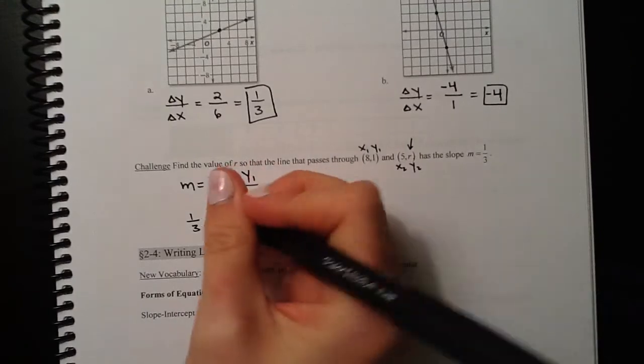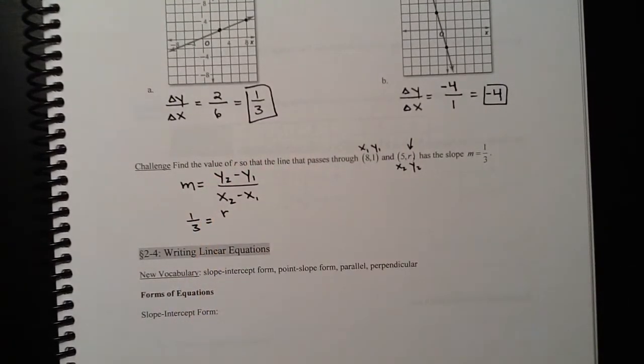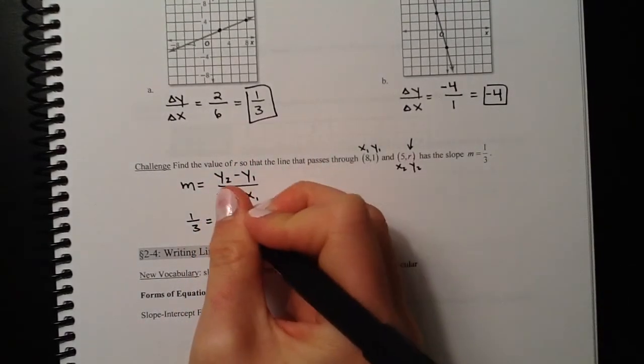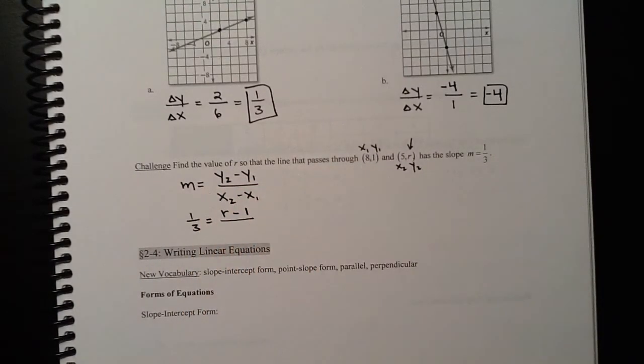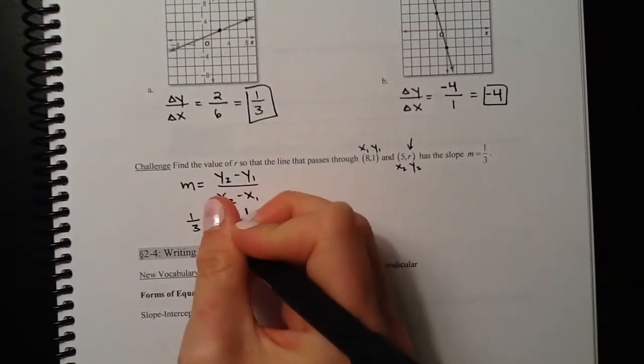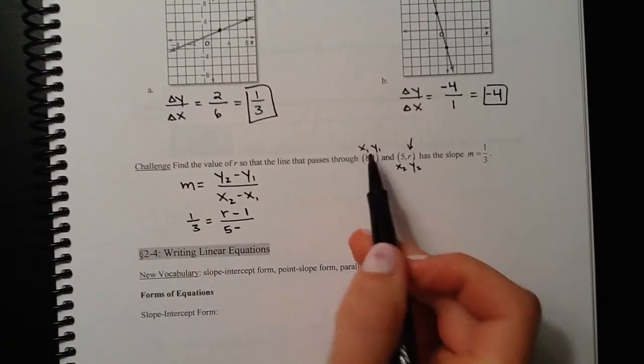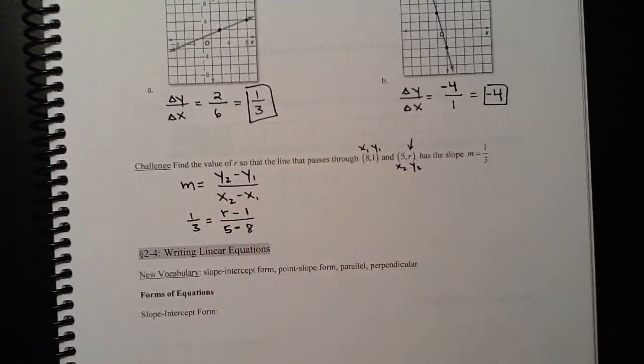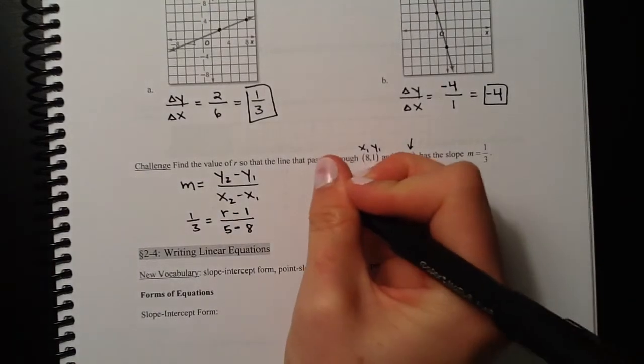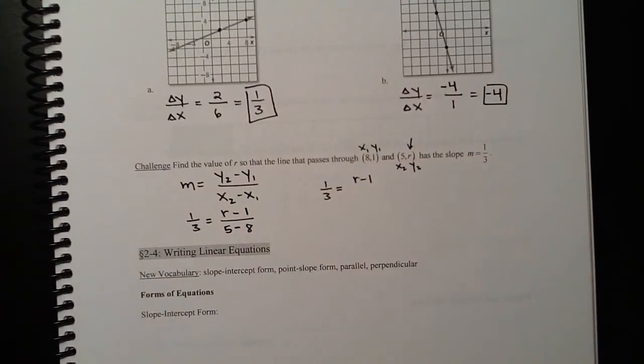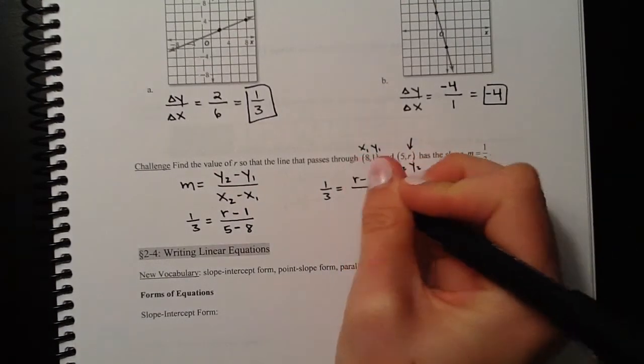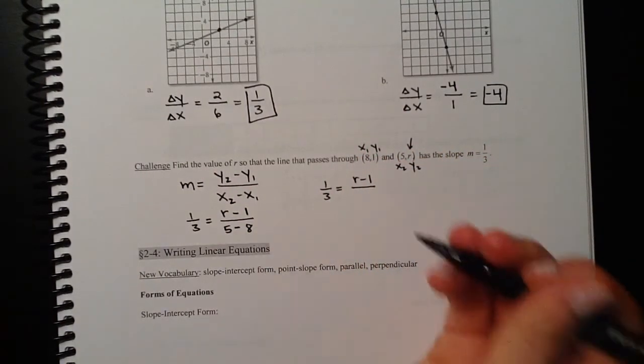Let's fill everything in that we know. m is one-third. y2 is what we don't know, that's r. We're just going to fill in an r, and that's our variable that we're going to solve for. Minus y1, which is 1, over x2 is 5, minus x1 is 8. We get all that filled in and then we can simplify. We've got one-third equals r minus 1 over 5 minus 8, which is negative 3.